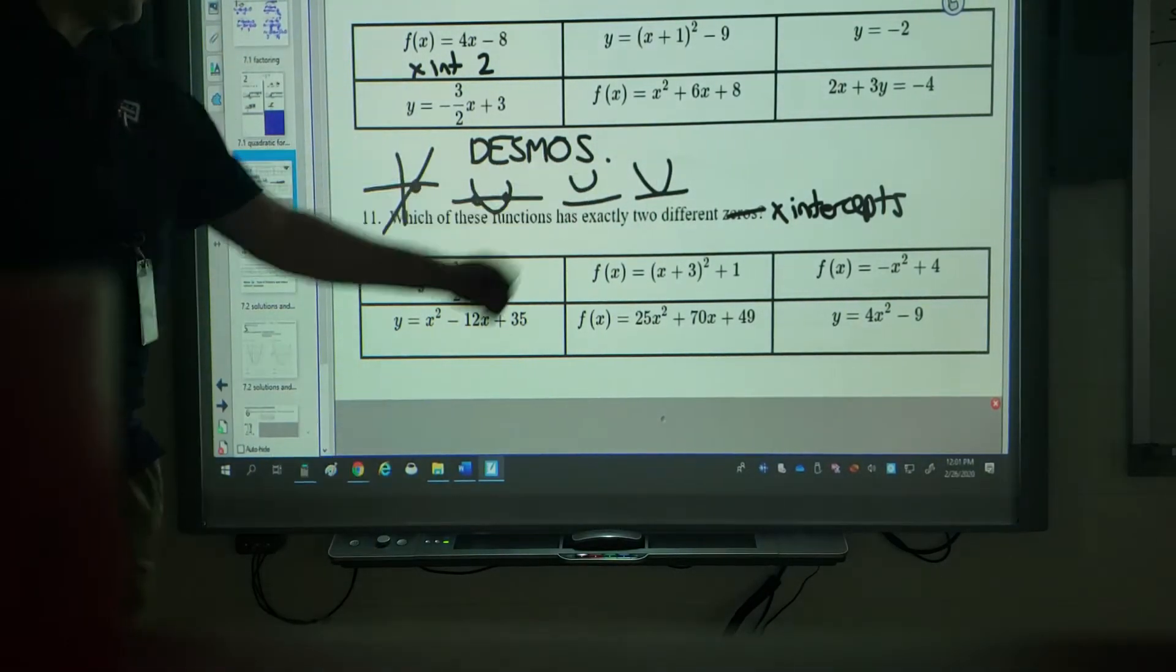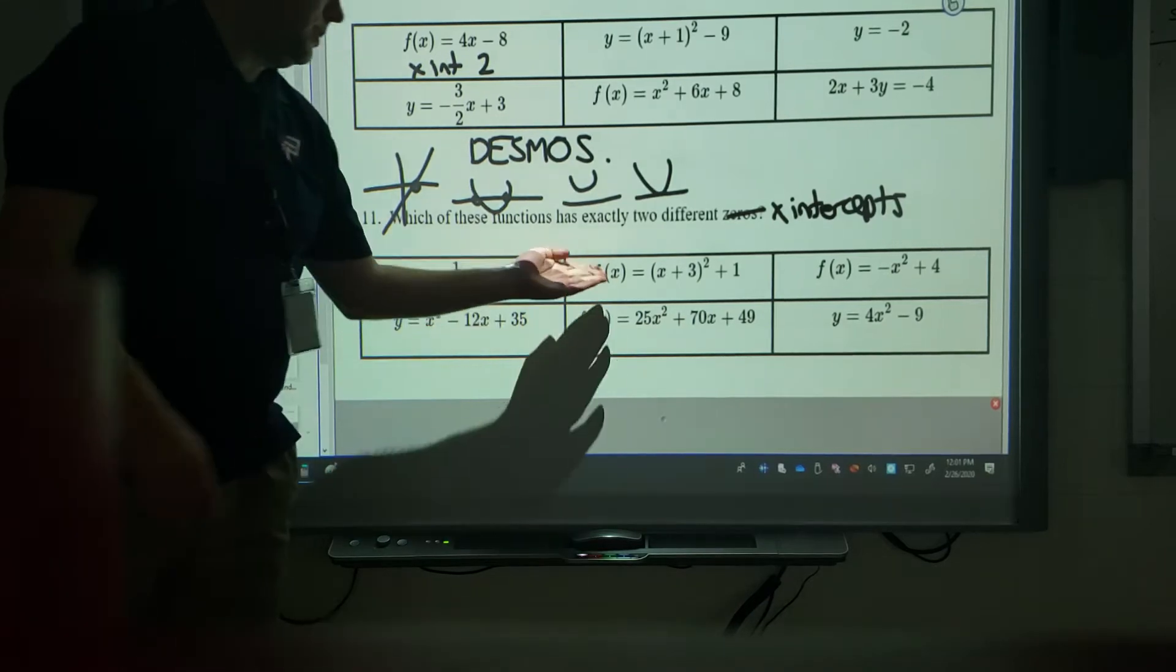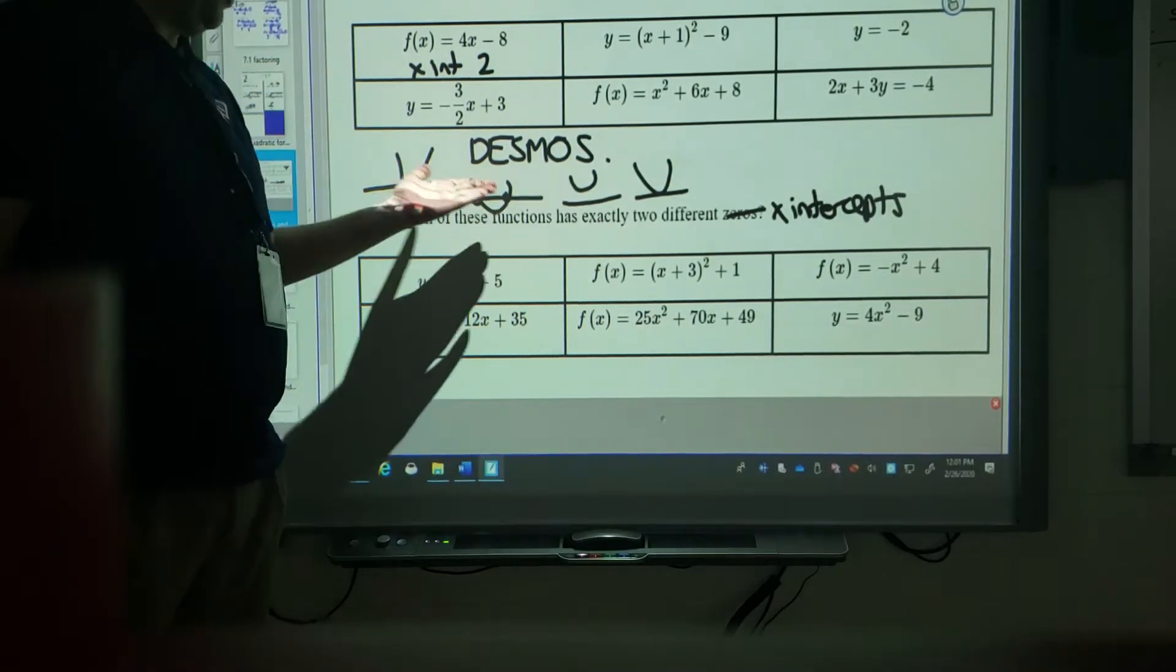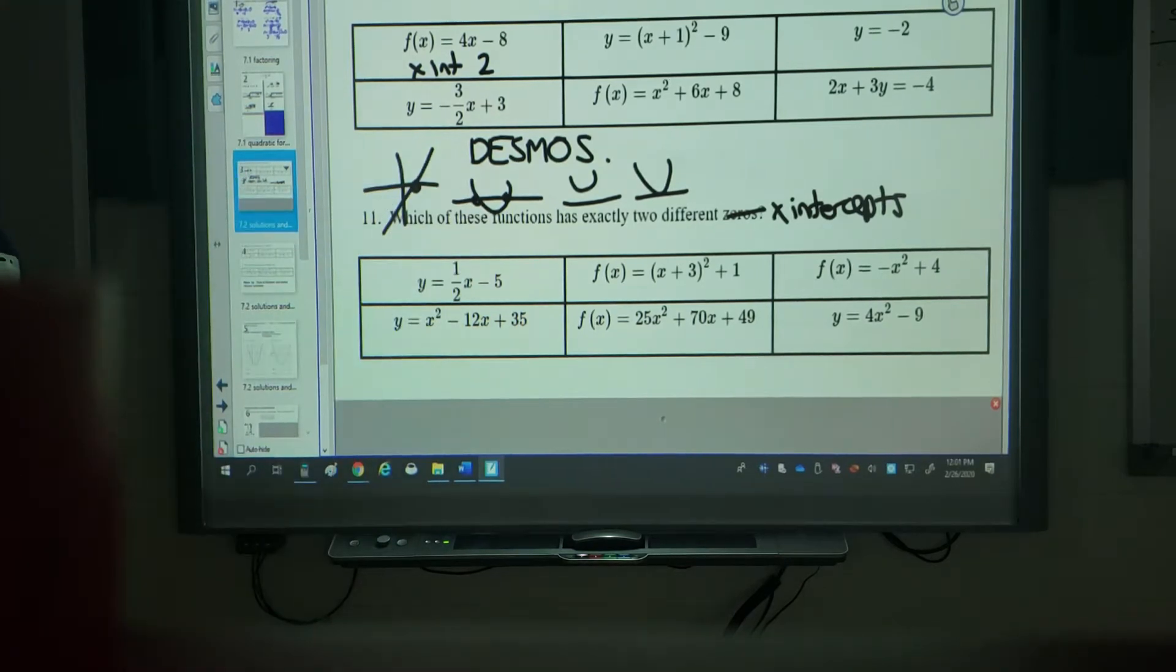So all I can do is I'm just going to type each of these questions in. Where it says y I'm going to put y equals. Where it says f of x I'm going to type f of x equals in. And I'm just going to look which ones actually look like this where we have it crossed two times.